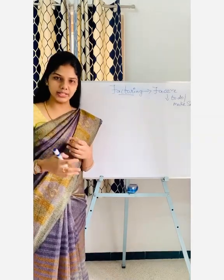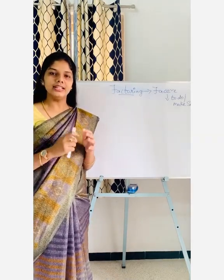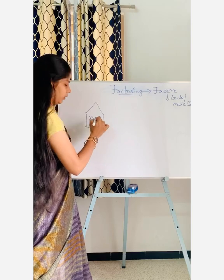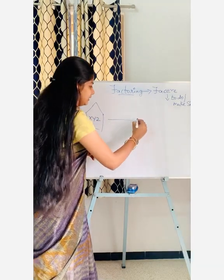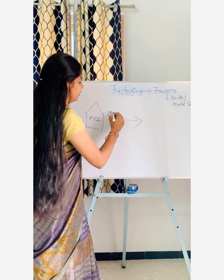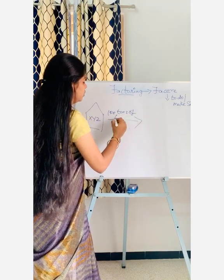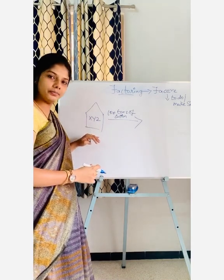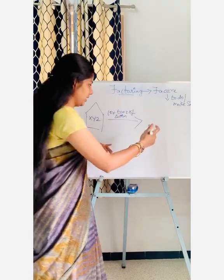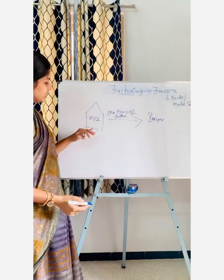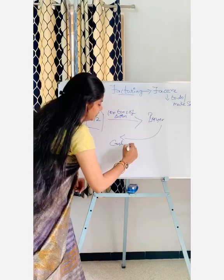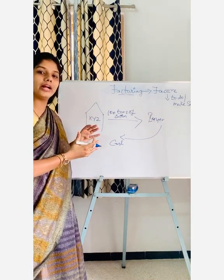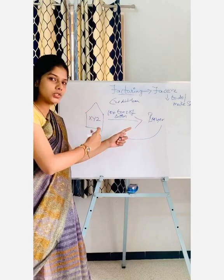Let me give you an example so that you understand very clearly. Imagine a company by the name XYZ. This company is selling one hundred tons of cotton to a buyer. After selling one hundred tons of cotton to the buyer, the buyer has to pay cash. Since this is a credit transaction — factoring usually happens in any kind of credit transaction — the buyer will promise the company that he is not going to pay cash immediately.